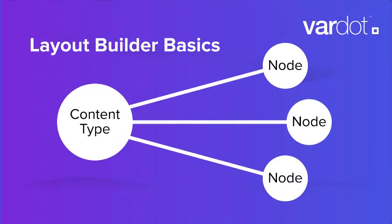In the simplest setup, a site builder creates a layout for a content type and applies the layout to all nodes of that content type. If they make changes to the layout, the changes apply to all existing and newly created nodes of that type. Configuration options allow the site builder to specify a default layout for a content type, while allowing per-node customization of that layout.